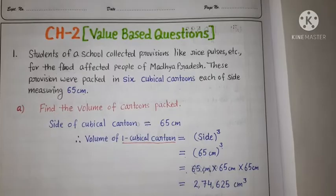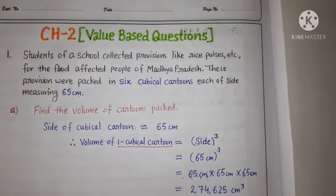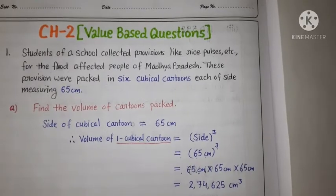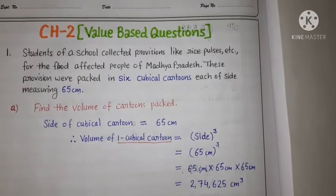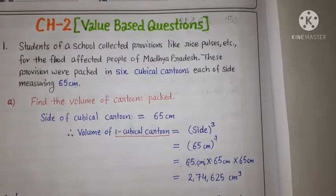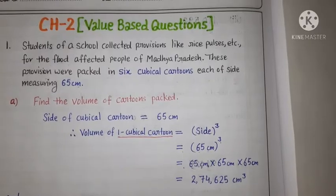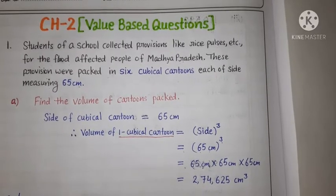Let us start question number 1. Students of a school collected provisions like rice, pulses, etc. for the flood affected people of Madhya Pradesh. These provisions were packed in 6 cubical cartons each of side measuring 65 cm.